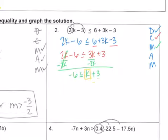And then move 3 away from k. So negative 9 is less than or equal to k. You can also rewrite it. k is greater than or equal to negative 9.